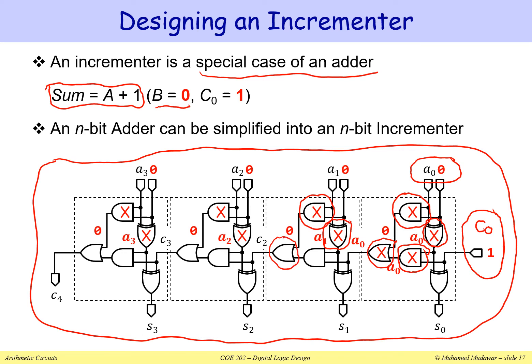The same can be said about this OR gate. Since we are ORing with zero, the output of this OR gate is simply the output of the AND gate. So we don't need this OR gate. Similarly, we don't need these other OR gates either. We can simply propagate the value from input to output — we don't really need the OR gates.